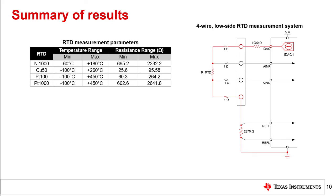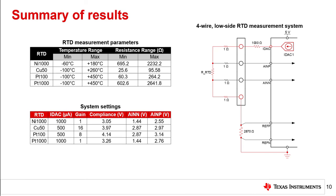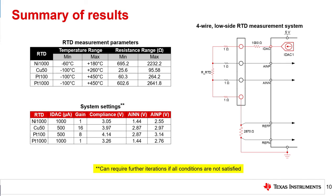The table on the top left lists the RTD measurement parameters used in this example, while the image on the right is the 4-wire RTD measurement system we analyzed. After stepping through the general process, we selected the system settings shown in the table on the bottom left. At each step in the process, we verified that our selected settings met the requirements of the ADS124S08, and therefore each combination is valid for all RTDs. If for some reason the settings were invalid at any point in the design process, further iterations may have been necessary to identify an acceptable solution.